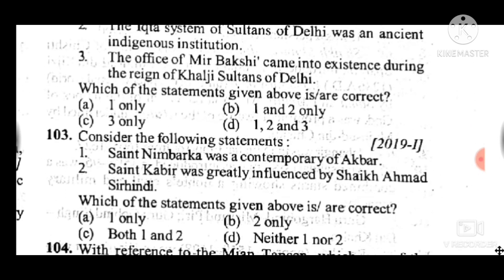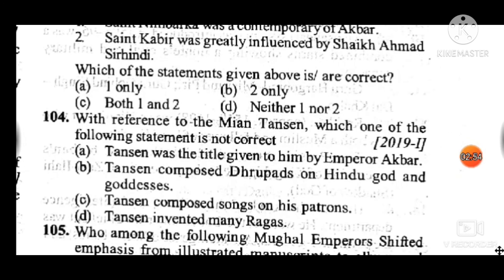Question 103: Consider the following statements. Answer to question 103 is D: neither statement 1 nor statement 2 is correct. Question 104: With reference to Tansen, which one of the following statements is not correct? Answer to question 104 is A: the statement that Tansen was a title given to him by Emperor Akbar is incorrect. Statements B, C and D are correctly related to Tansen.